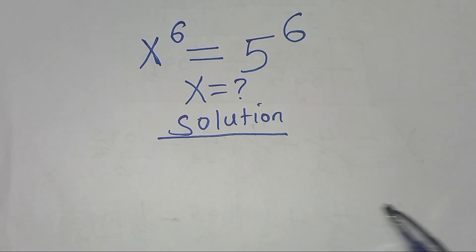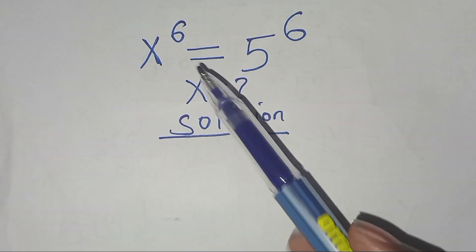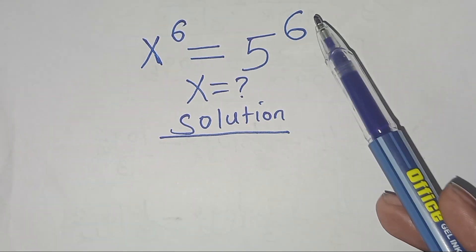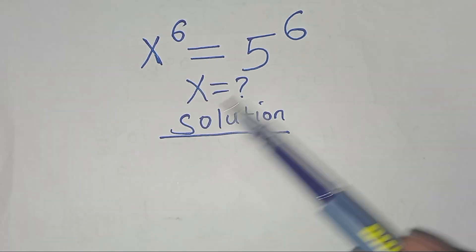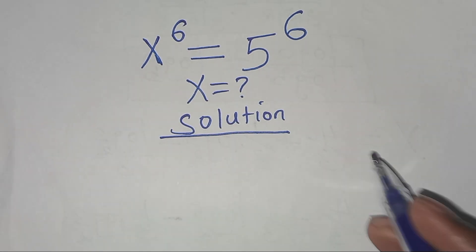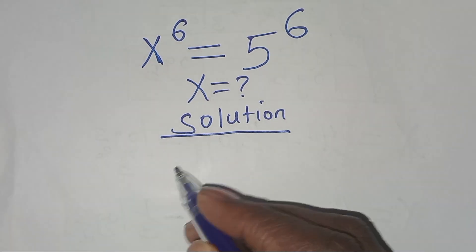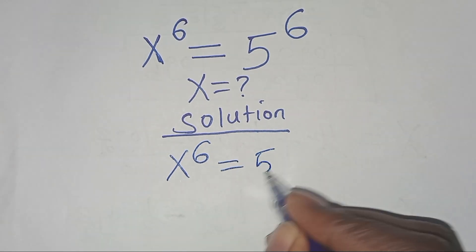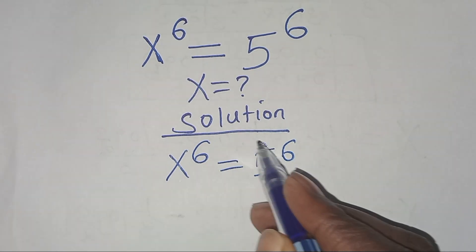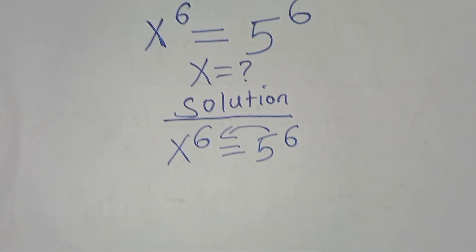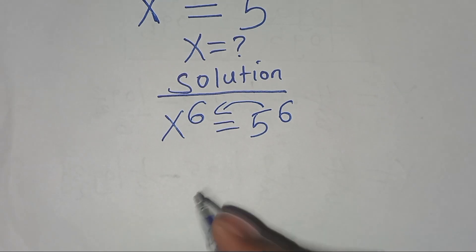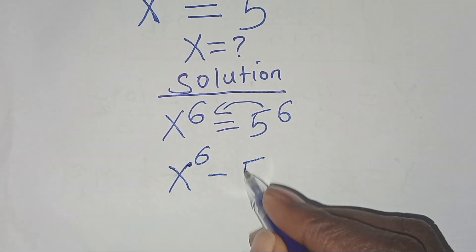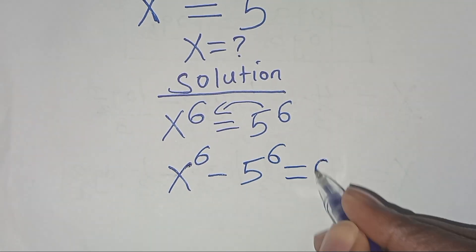We are welcome to solve this exponential equation: x to the power 6 is equal to 5 to the power 6. What are the values of x? From here we have x to the power 6 equal to 5 to the power 6. The first step is to take 5 to the power 6 to the left hand side, so we have x to the power 6 minus 5 to the power 6 equals 0.